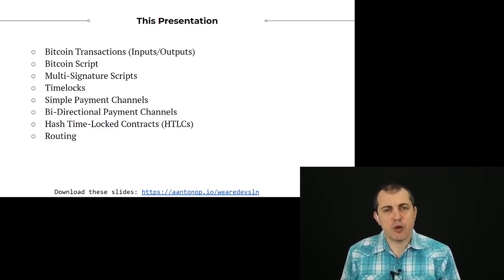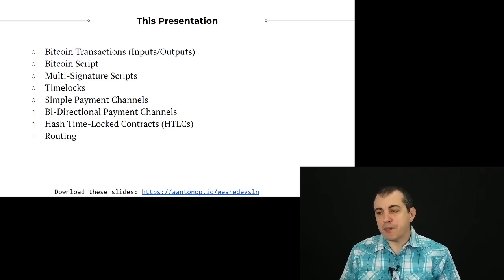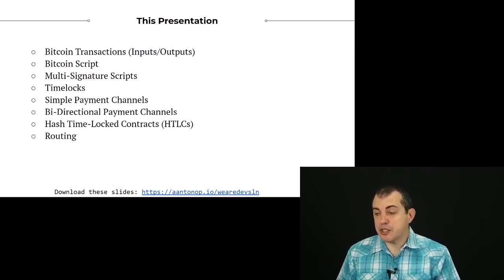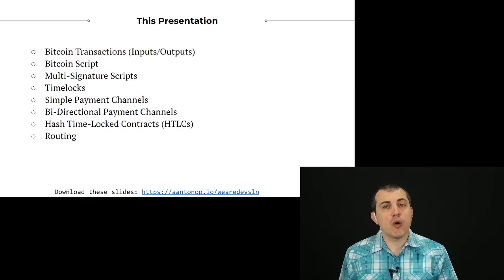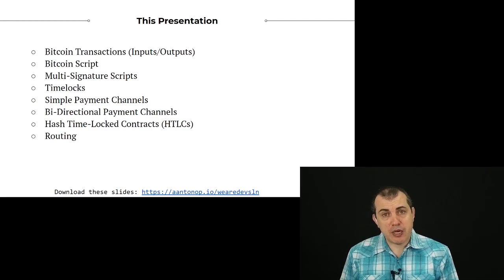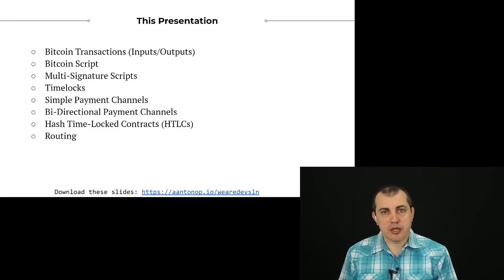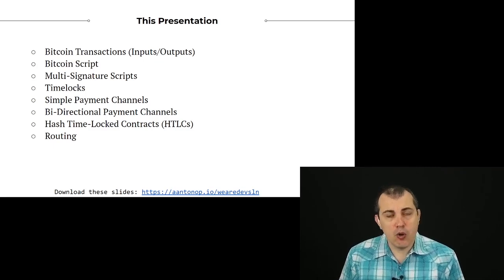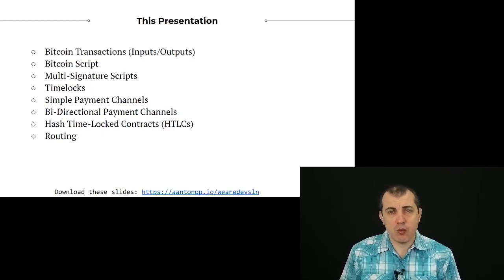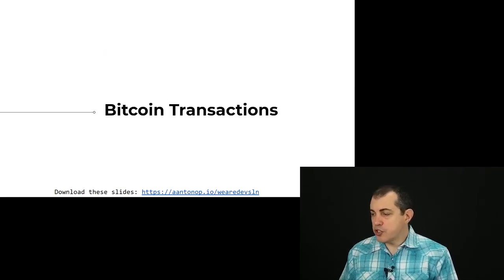I'm going to cover some of the basics of Bitcoin very briefly, just to give you a foundation. We'll talk about Bitcoin transactions, Bitcoin script and multi-signature scripts, the security primitives of time locks, and then how we use all of these Bitcoin primitives to build simple payment channels, then bidirectional payment channels, and then hash time-locked contracts, and how we put all of these ideas together to achieve a routed payment channel network called the Lightning Network.